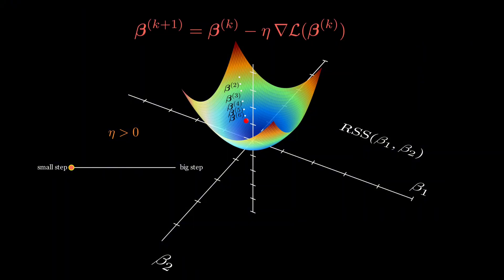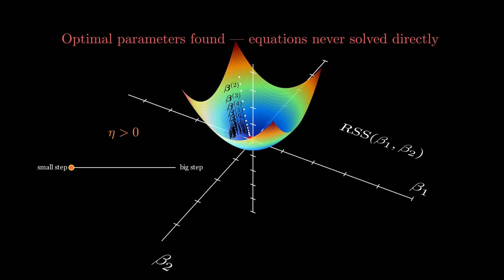We repeat this process until the change in the loss function becomes negligible. Eventually, we reach a point where the loss function stops decreasing significantly. At that point, we've found our optimal parameters.